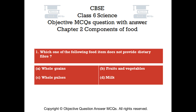Question number 1. Which one of the following food items does not provide dietary fiber? Option A: Whole grains. Option B: Fruits and vegetables. Option C: Whole pulses. Option D: Milk.